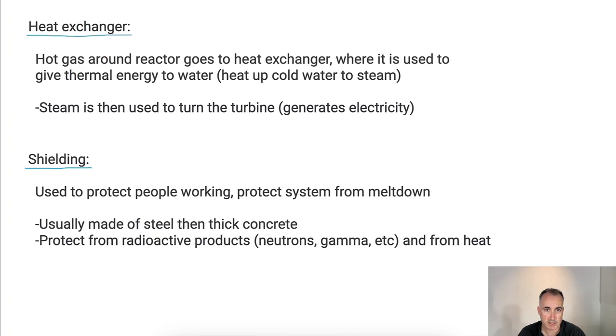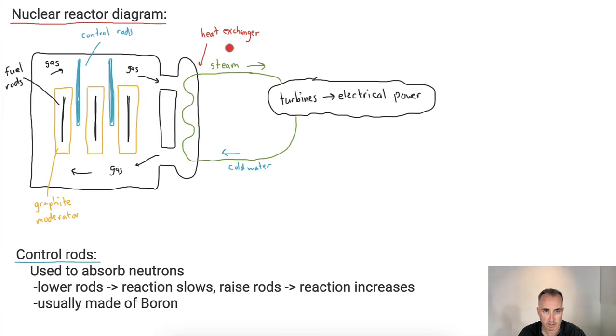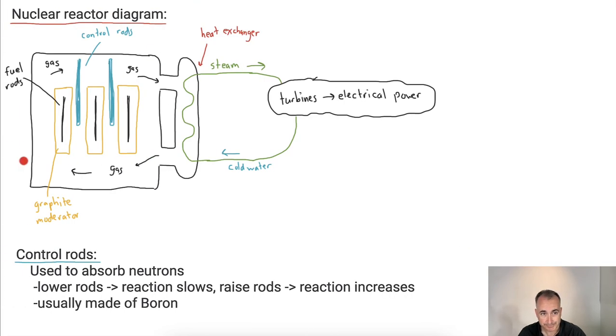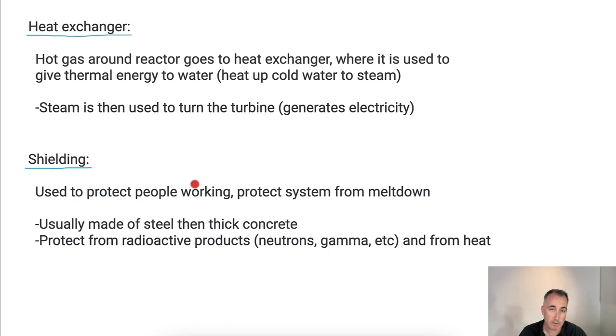So let's talk about the details here. This heat exchanger, this thing right here, this area right here, what is that? Well, that's hot gas around the reactor goes to the heat exchanger. It's used to give thermal energy to the water. Basically, that steam is used to turn the turbine. Now, what I didn't draw here, this entire thing is covered. This whole thing is shielded. We have shielding. This is because we want to protect the people. We want to protect the system from a meltdown. Basically, they use really strong structures like steel, but also really thick concrete. Because also there's lots of radioactive products that come from this. There's neutrons, there's gamma rays, there's lots of stuff. It gets really hot. So you want to shield everything.